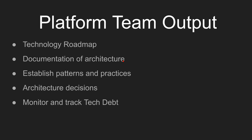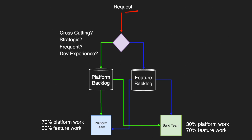Next, we can take a look at how we decide what is platform work. When a request comes in, we need to make a decision. We look at whether or not the request is cross-cutting — does it affect multiple teams? Is it strategic for our business? Is it frequent — does it happen very often, is it something developers constantly have to do, and can we reduce the time it takes? And is it related to developer experience? If it is, then we put it into the platform backlog. If it isn't, it may be considered a feature backlog.